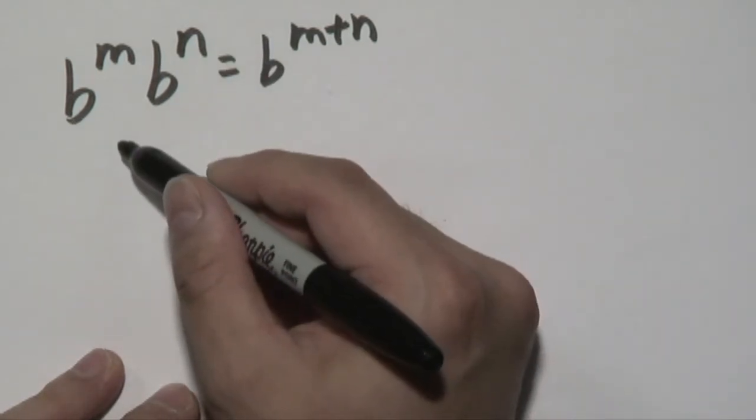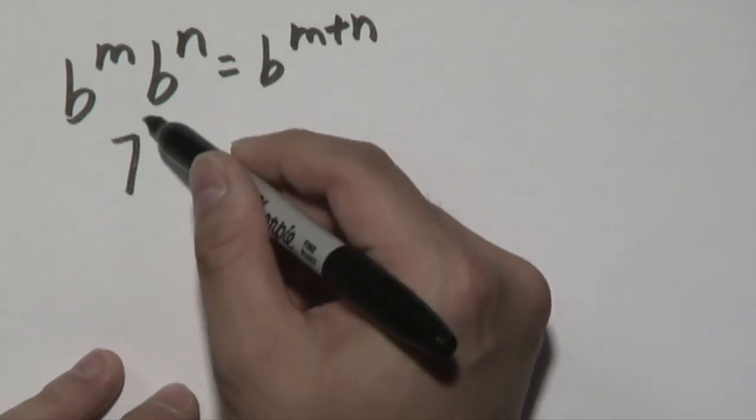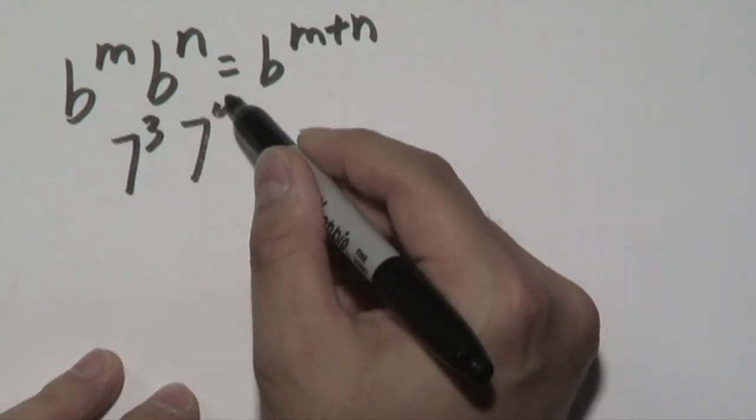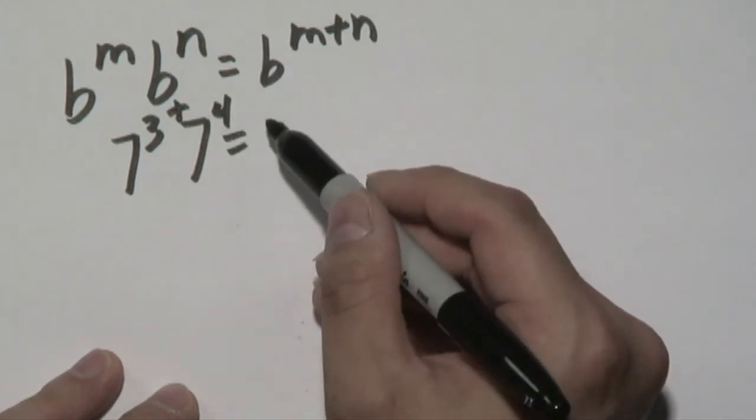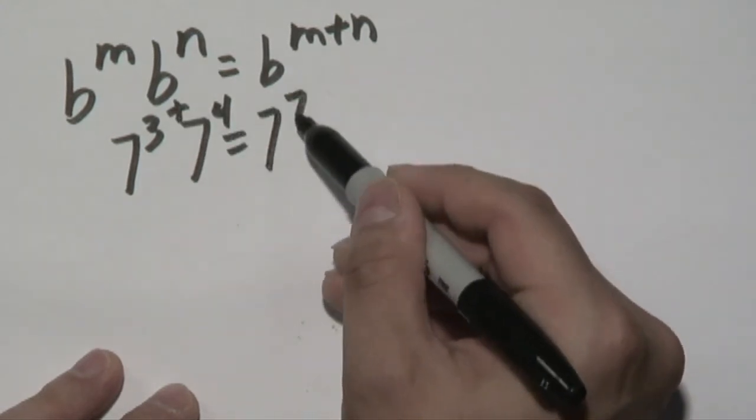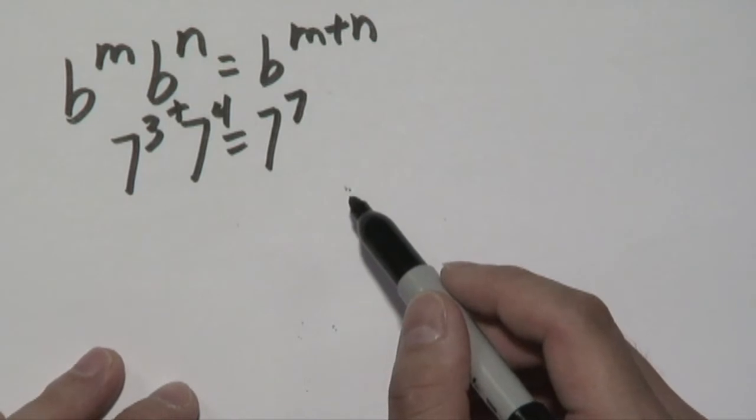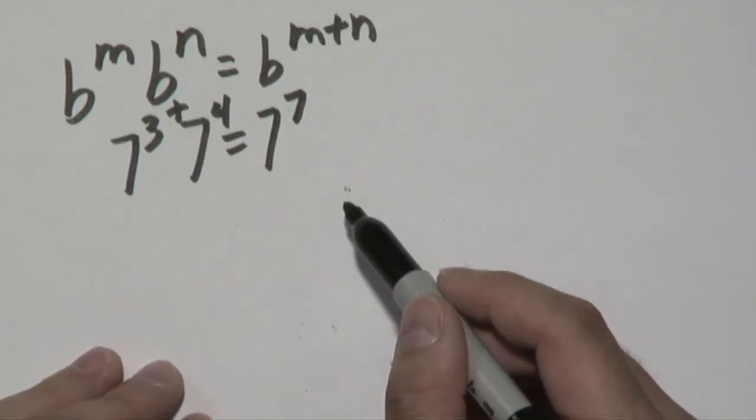So if you have something like, for example, 7 to the 3rd times 7 to the 4th, what you can do is add the 3 and the 4 together. So 7 to the 3rd times 7 to the 4th would be 7 to the 7th power, and you can use a calculator on finding out what the actual value of that is.